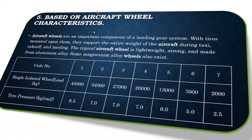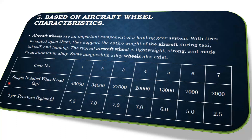The next classification is based on aircraft wheel characteristics. Aircraft wheels are an important component of the landing gear system; with tires mounted upon them, they support the entire weight of the aircraft during taxi, takeoff, and landing. A typical aircraft wheel is lightweight, strong, and made from aluminum alloy; some magnesium alloy wheels also exist. Code numbers one through seven are used, with single isolated wheel loads ranging from 45,000 kg down to 2,000 kg, and tire pressures ranging from 8.5 kg/cm² down to 2.5 kg/cm². These standards are given by ICAO.